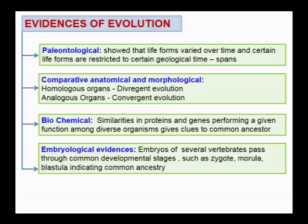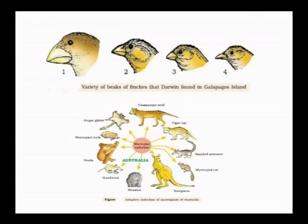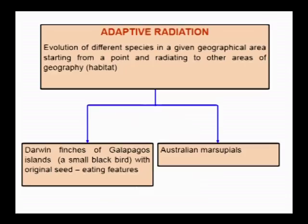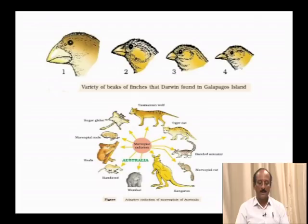Adaptive radiation is defined as the evolution of different species in a given geographical area starting from a point and radiating to other areas of geography. The best examples of adaptive radiation are Darwin's finches of the Galapagos islands and marsupials of Australia. Darwin's finches are small birds with original seed-eating features, and different varieties of marsupials are restricted to that particular continent.